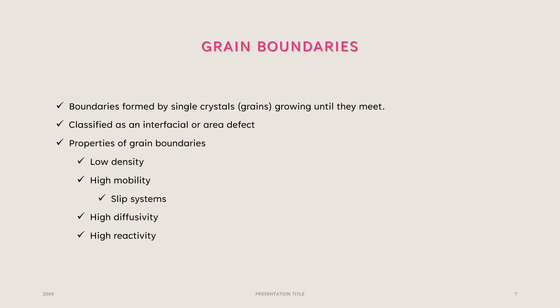Grain boundaries are very important in polycrystalline materials because they have a big role in the material's properties. Boundaries are formed when single crystals grow until they meet. Grain boundaries are classified as an interfacial or area defect in a material. Some properties of grain boundaries are low density, high mobility, high diffusivity, and high reactivity. Part of high mobility includes slip systems — grain boundaries are prone to slippage, which is caused by tensile elongation.